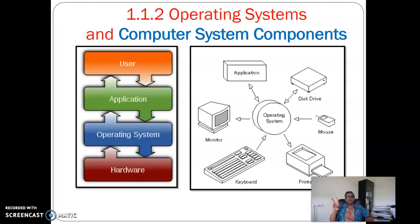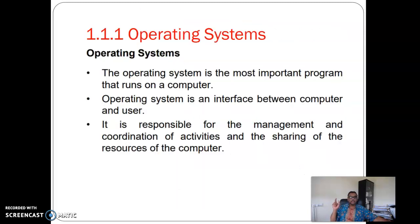Unlike an operating system, which controls everything — it is more of a general task. So always remember: what is the difference between an operating system and application software? These are two different things and you need to understand that difference. An operating system is the most important thing, and point number three: management, coordination of activities, and sharing of resources. Remember these three points — manage, coordinate, and share — for your test or quiz.